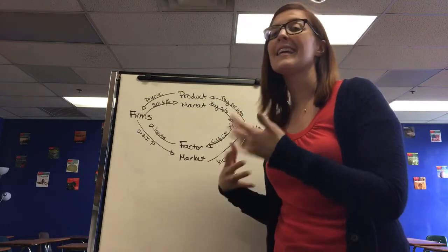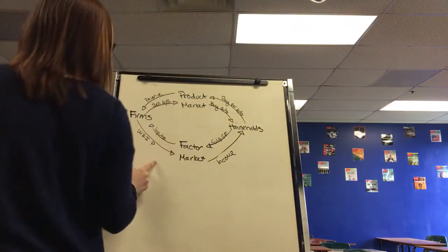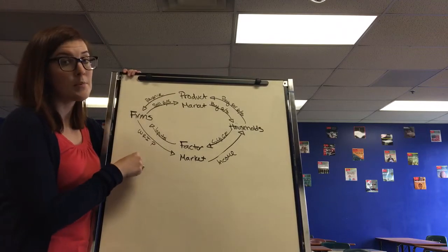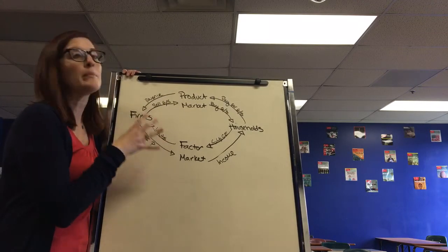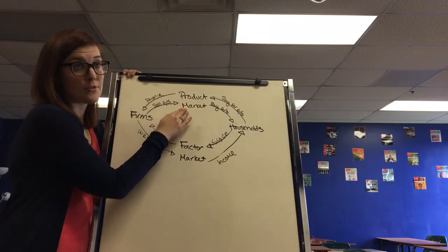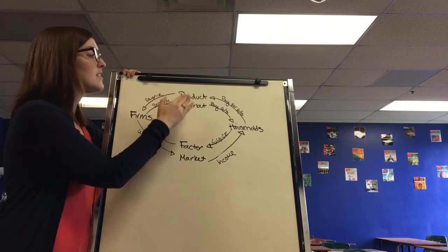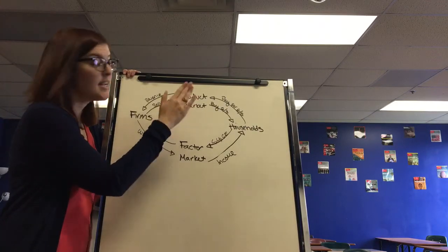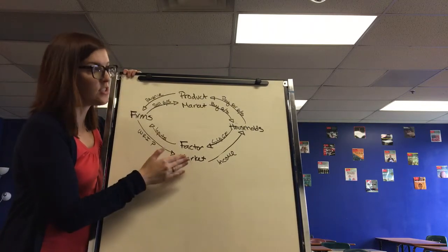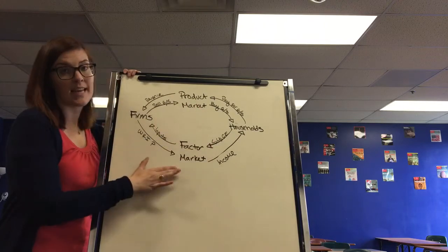The next thing I want to talk about is the circular flow model. The first graph we learned, which you probably won't have to draw on the AP exam but it does show up conceptually. In the circular flow model we have the product market, which is the market for goods and services, also known as the expenditure approach in GDP - the C, the I, the G, the XN. And the factor market, which is dealing with the different types of resources.